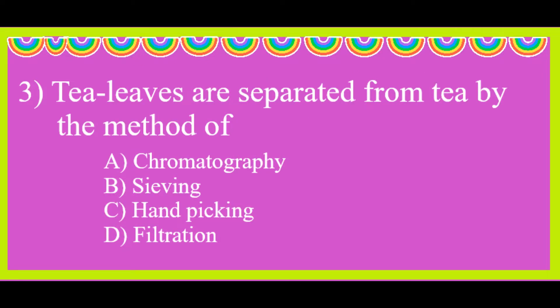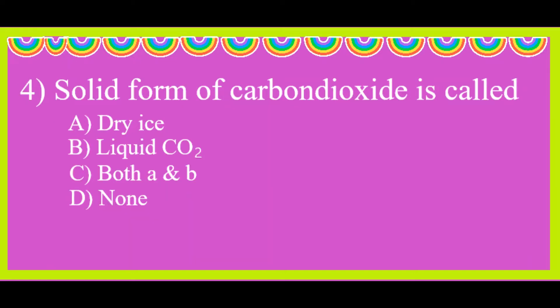Third question: tea leaves are separated from tea by the method of filtration. Fourth question: solid form of carbon dioxide is called dry ice.